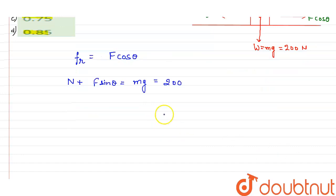Now we know that we can write that N equals 200, N equals 200 minus F sin theta.